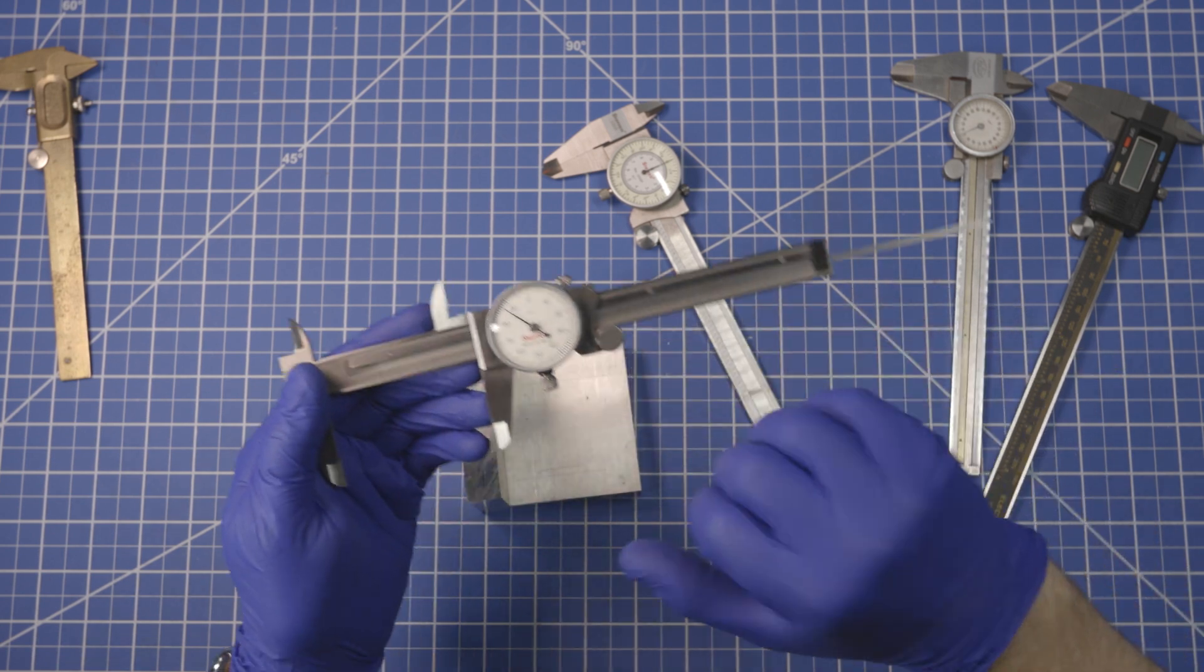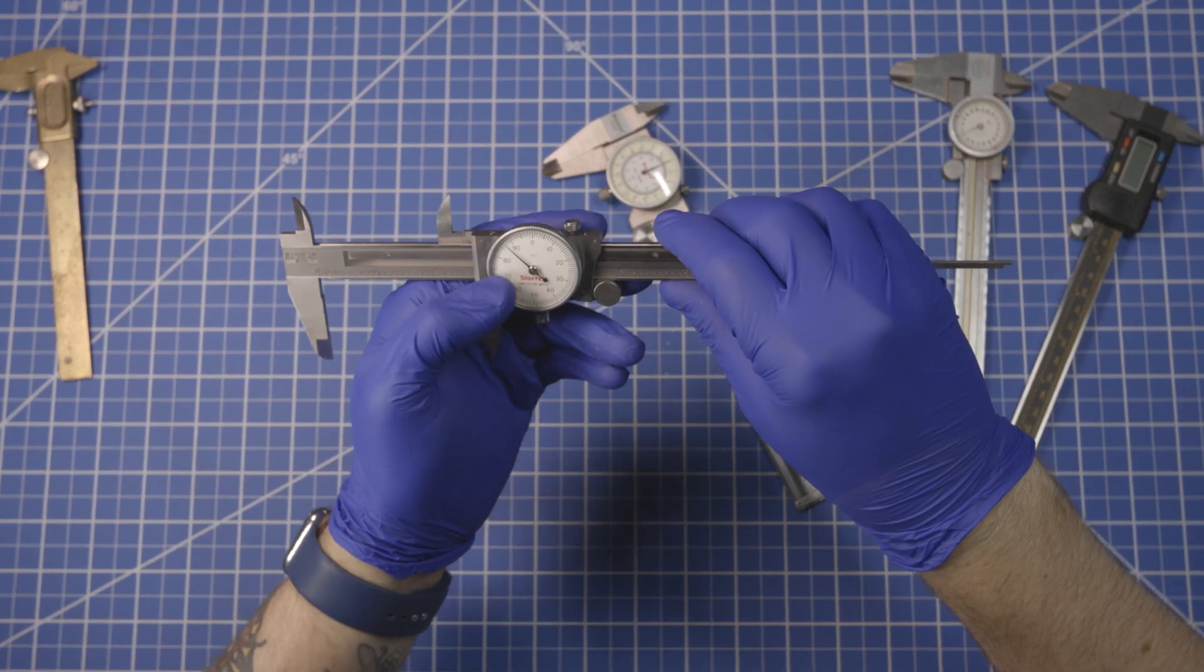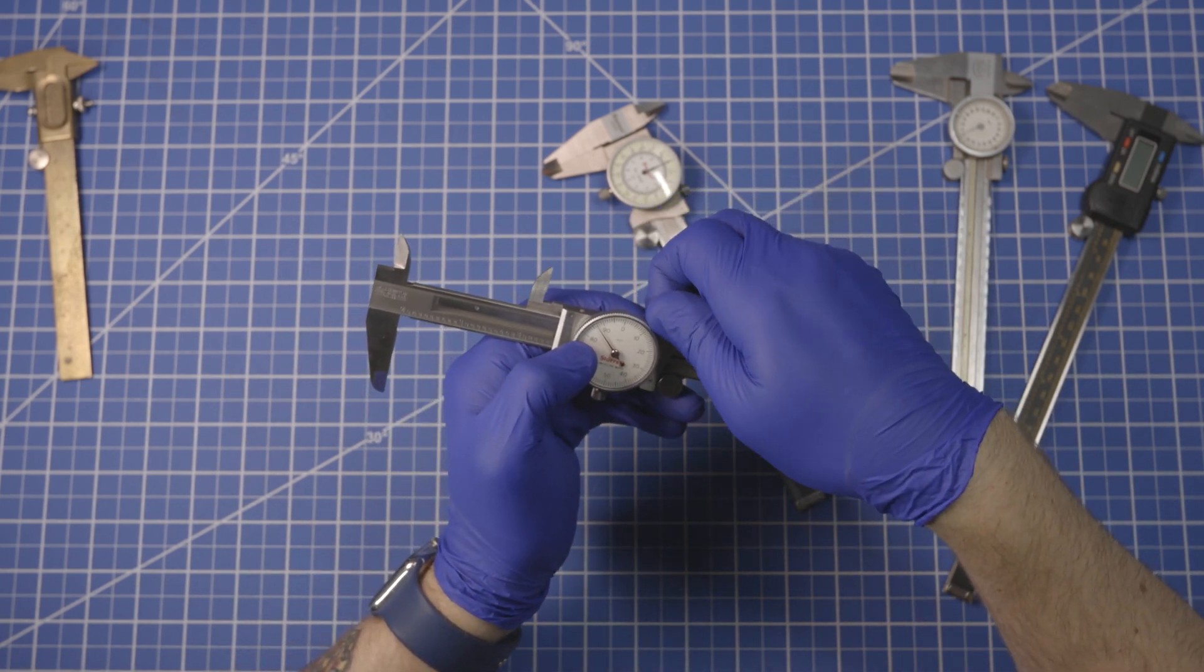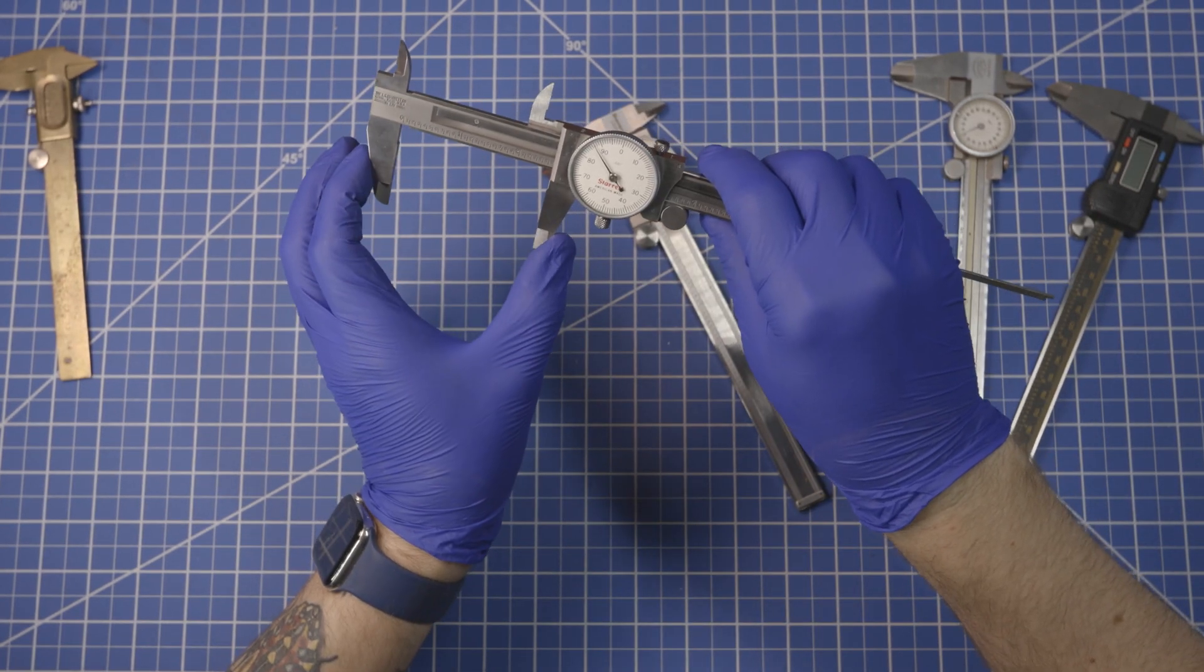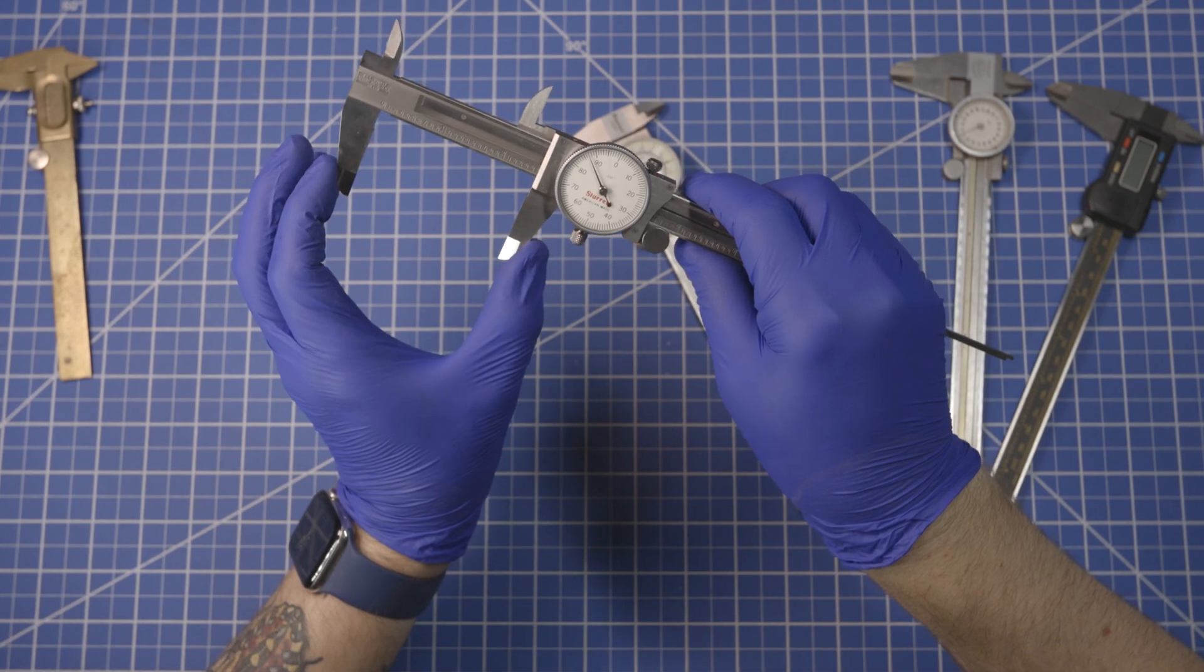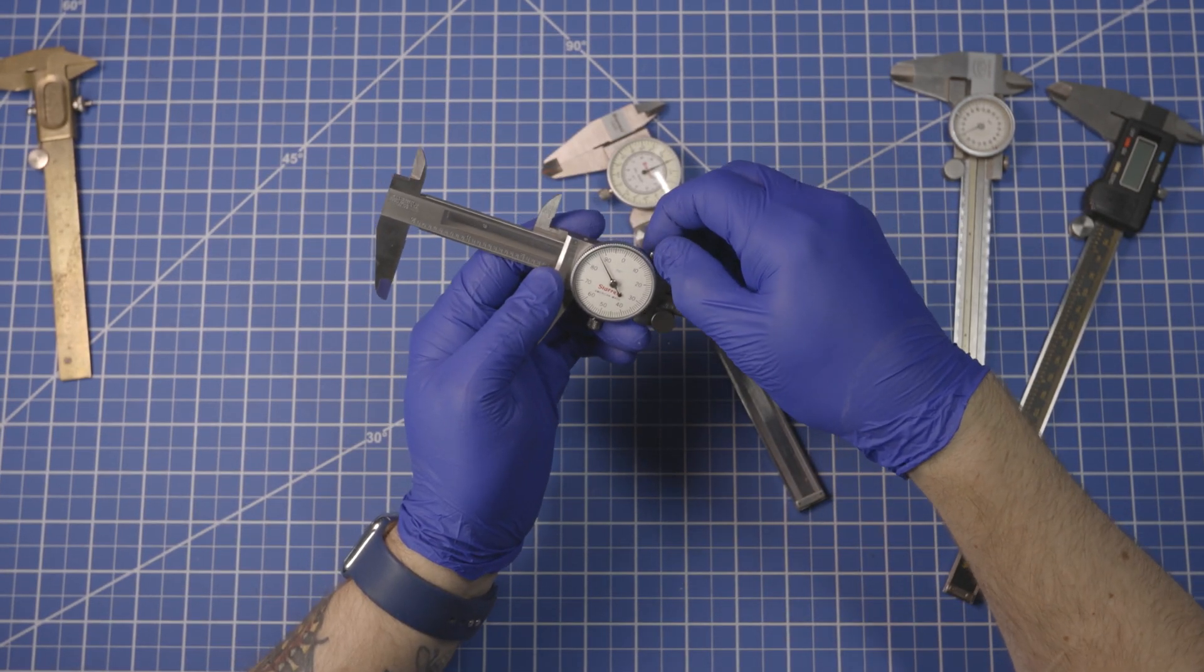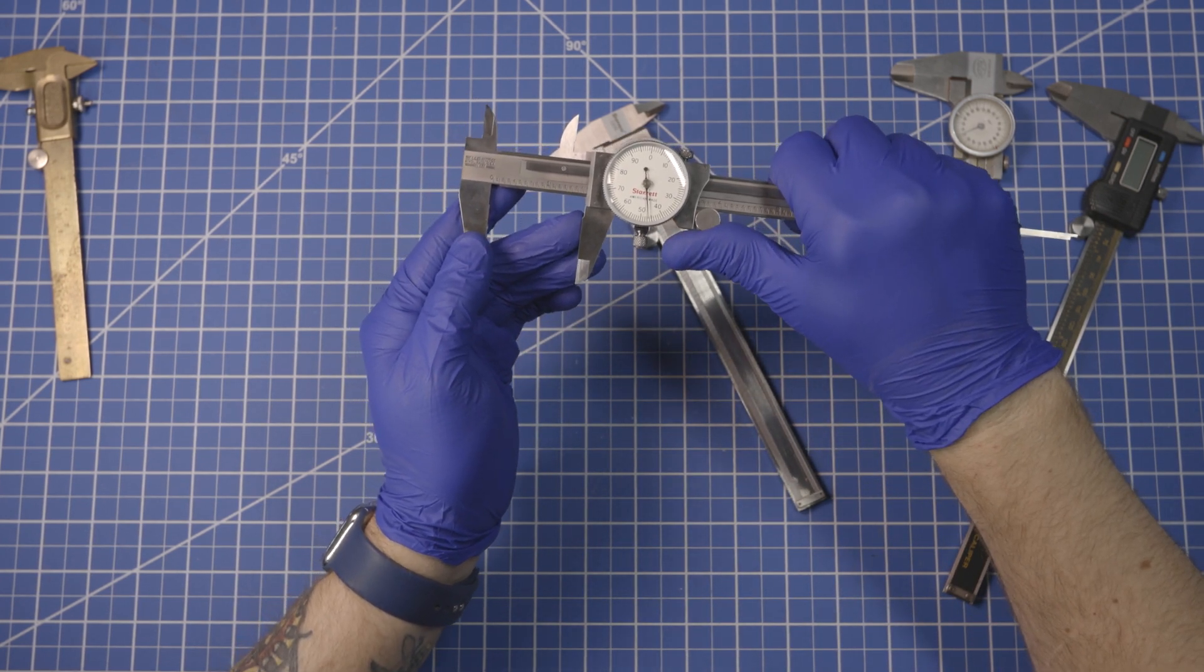Now some of the other features of these calipers is we mentioned the lock screw. That allows you to either preserve a measurement. I mean you could force it, but don't. But it prevents it from being bumped out of the measurement you've taken. And then you just loosen it to use the tool again.